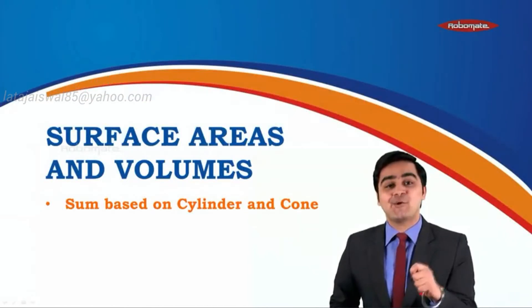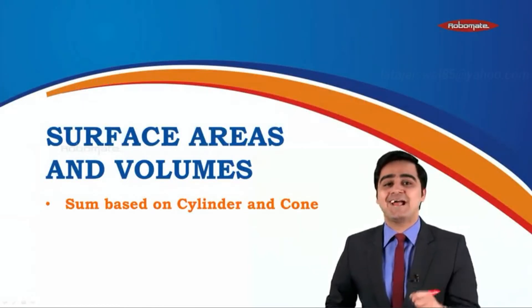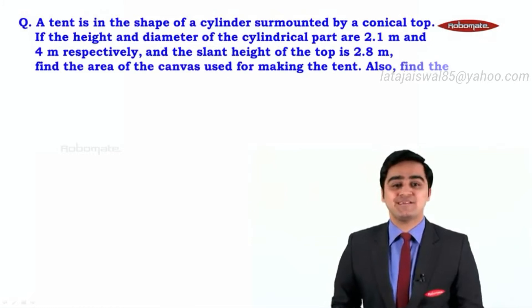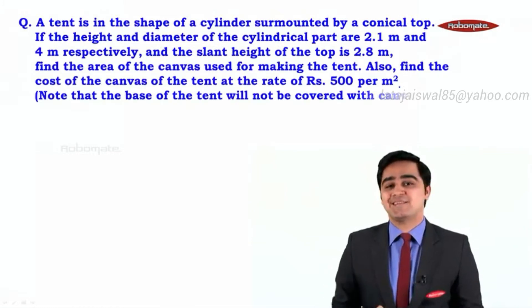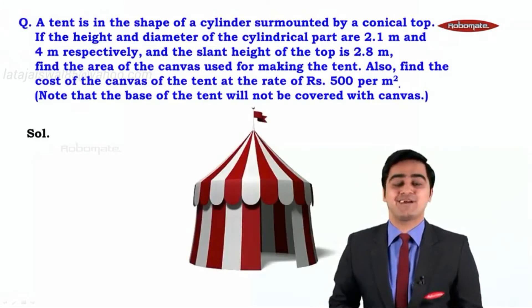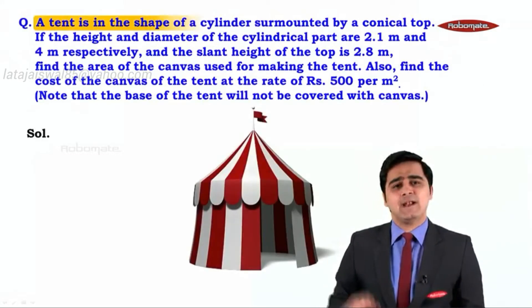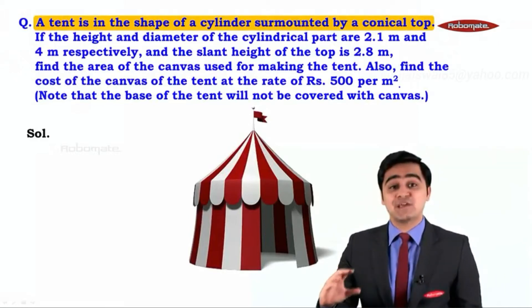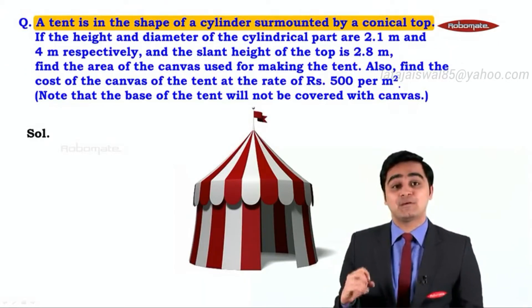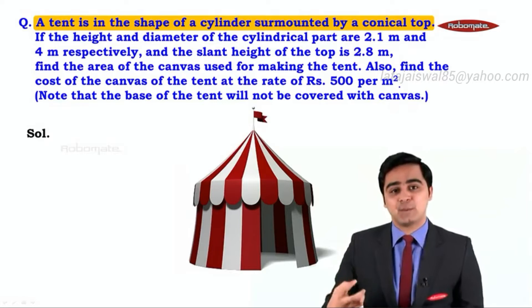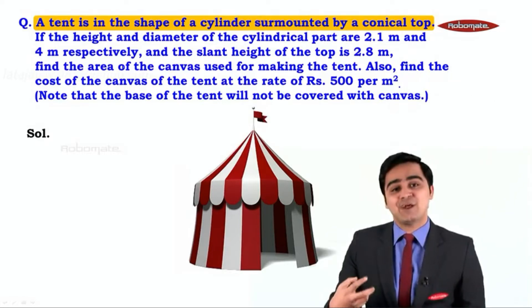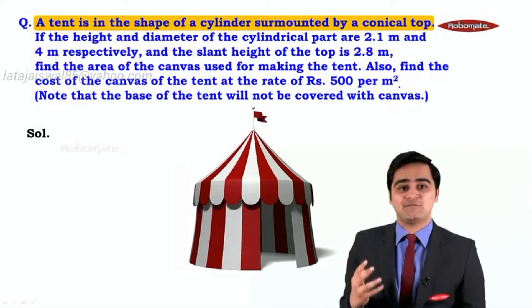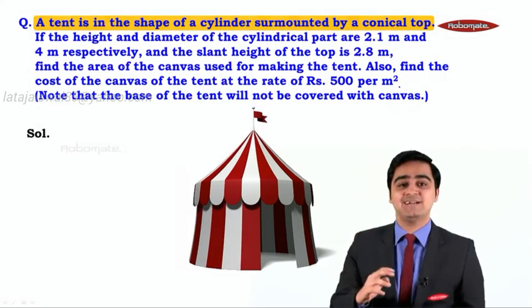This is an important sum based on cylinder and cone. Now this is the question we have in front of us. Let us understand the question with the help of the figure. It says that a tent is in the shape of a cylinder surmounted by a conical top. We have a cylinder surmounted by a conical top, and the entire solid we have is a tent.